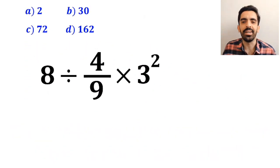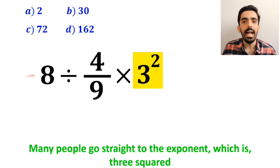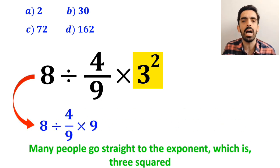Let's break it down and solve it together. In the first step of solving this question, most people go straight to the exponent, which is 3 squared, and simplify the whole expression to 8 divided by 4 over 9 times 9.